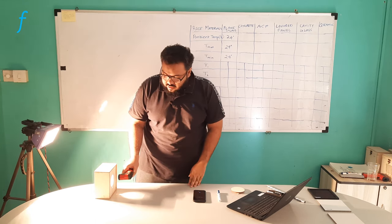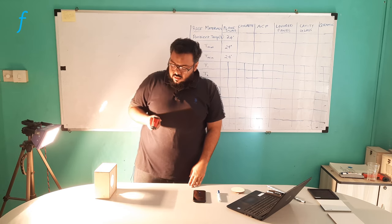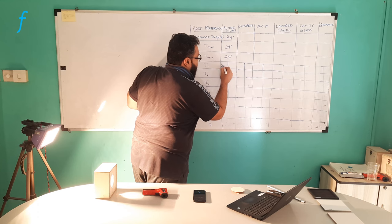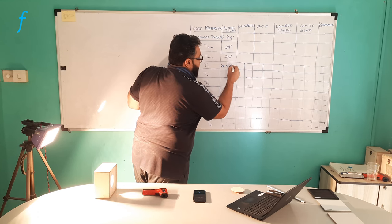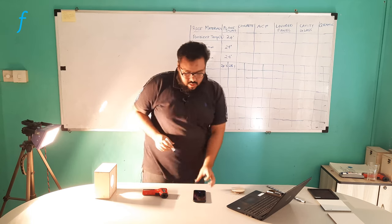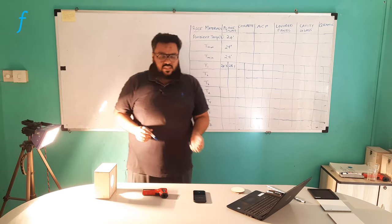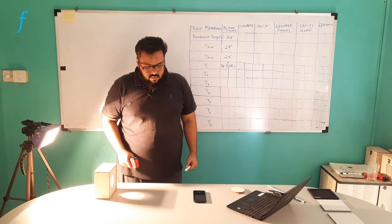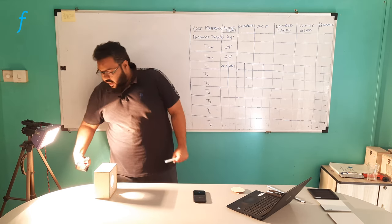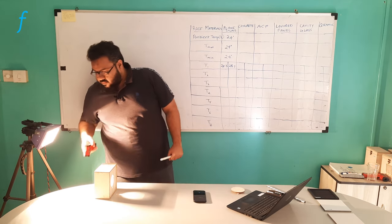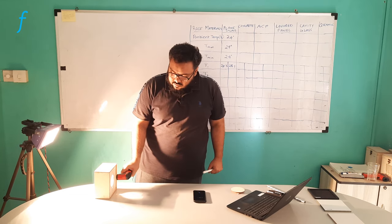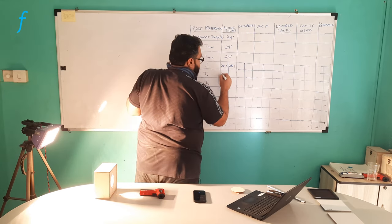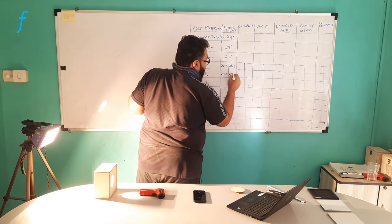The outside temperature is coming out to 28.3 and inside is 28.1. I am waiting for another 30 seconds for my next reading. It is 30 seconds. The next set is 29.2 outside and 28.7 inside.